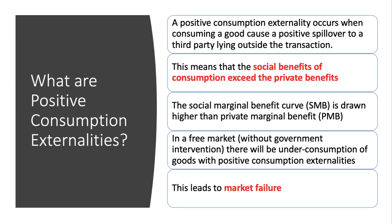So what are positive consumption externalities? A positive consumption externality happens when somebody consuming a good or a service creates or generates a positive spillover to a third party that lies outside the transaction. What that means is that the social benefit of consumption — which is the private benefit plus the external benefit — exceeds the private benefits. In other words, there's an external benefit.